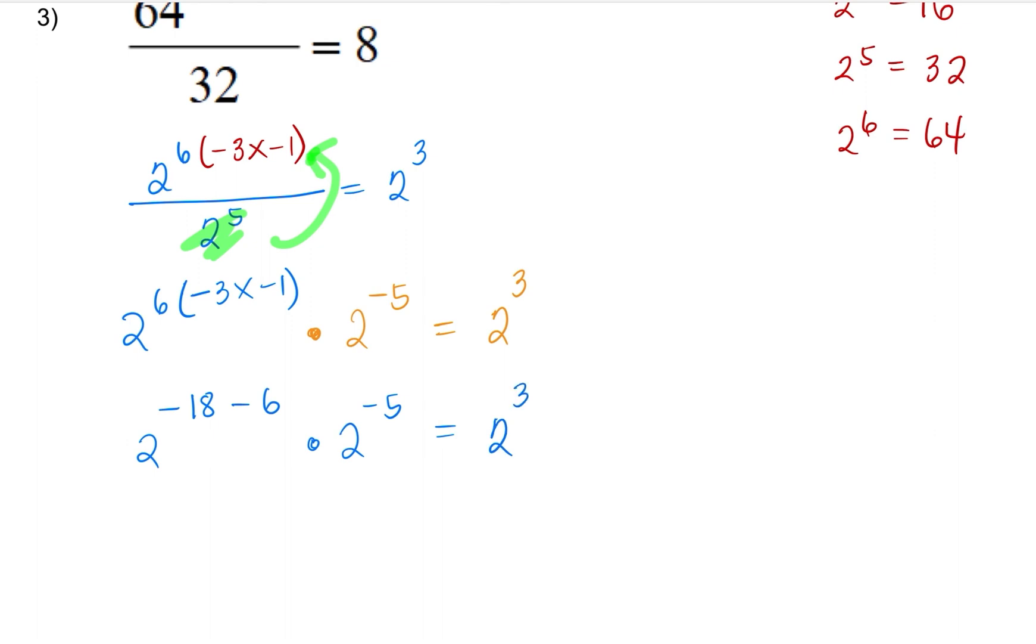So now that the bases are the same, let's focus. Oh, I'm missing something here. This should be negative 18x. I'm sorry. I overlook at the numbers. Now, since the bases are the same, we're going to combine like terms. So we're going to put this together as one base. And the exponents will be negative 18x minus 6, plus negative 5. We're adding exponents of the same base.